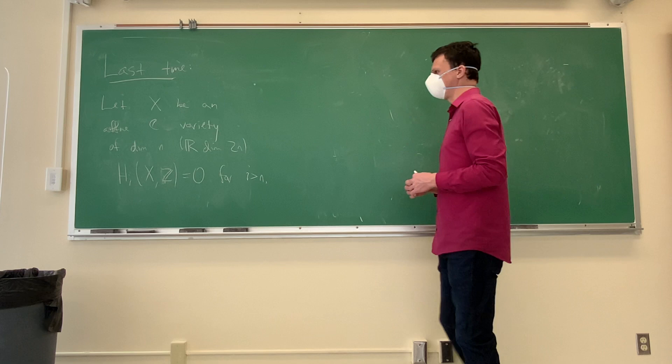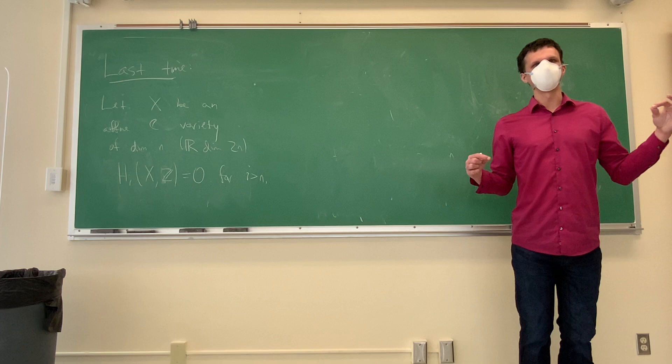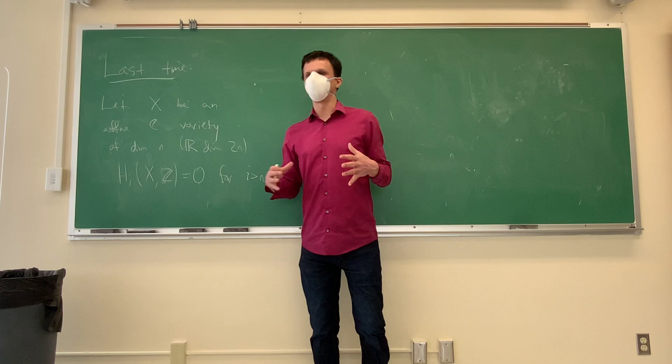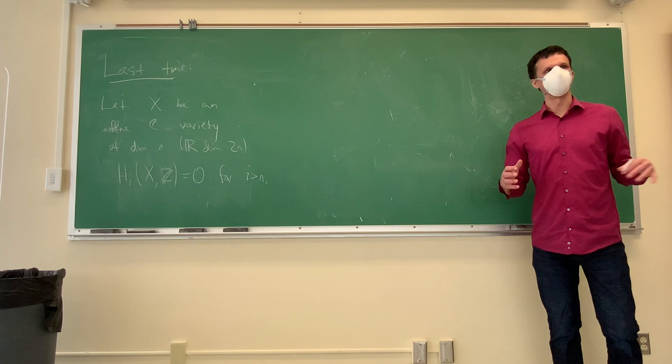This bound on n comes from the fact that this is a complex manifold. The Morse function we use is the distance to some fixed point, and then using the fact that the Hessian is going to be a complex quadratic form, you can swap positive eigenvalues for negative ones and get a bound on the index, because you can add the quadratic form to the identity matrix.